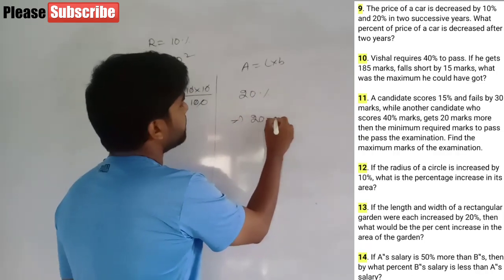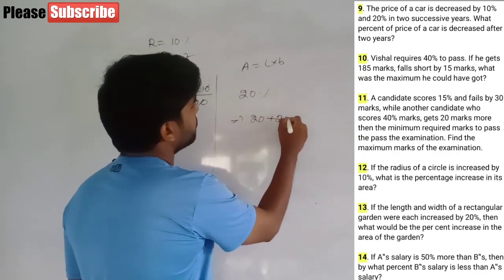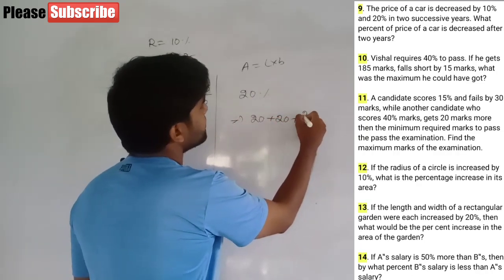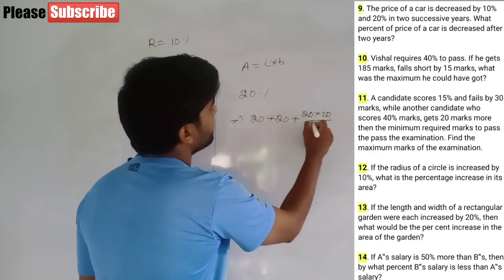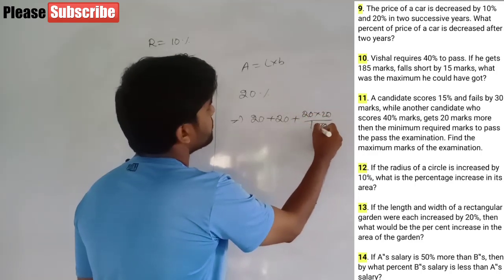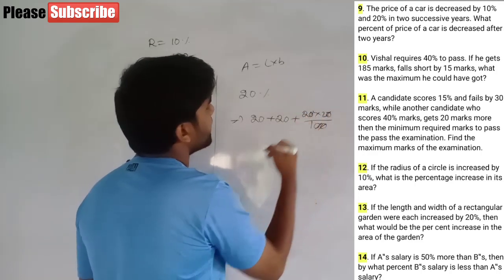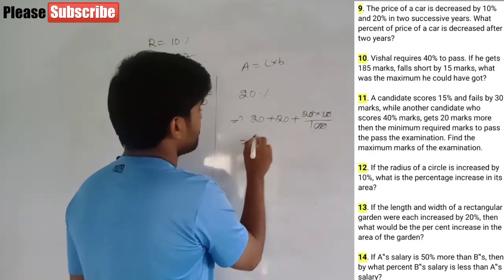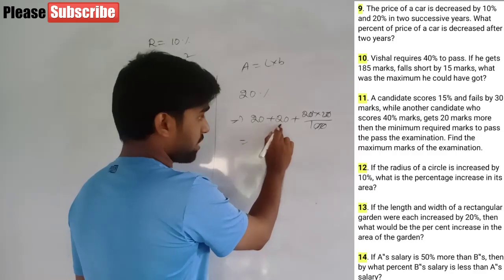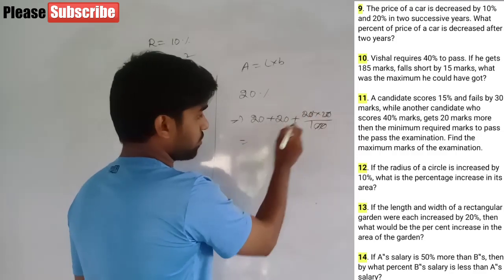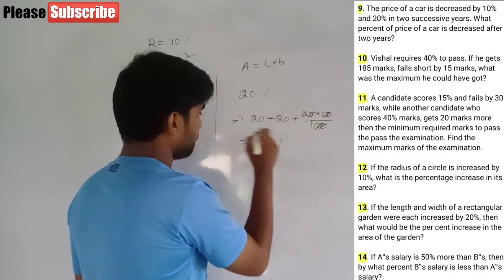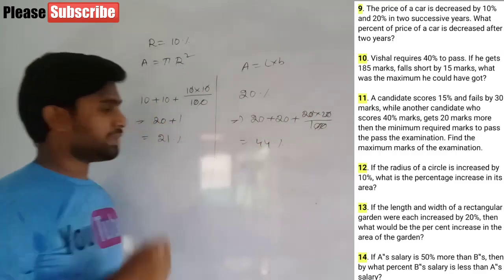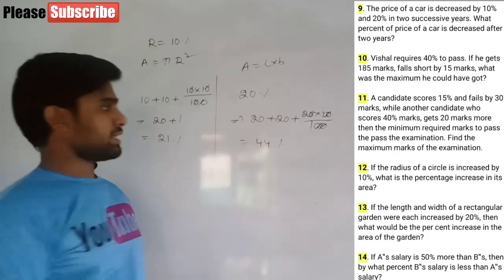Apply: 20 plus 20 plus (20 into 20) by 100. Zeros cancel. 20 plus 20 is 40, and 2 into 2 is 4, giving 44% increase in area.